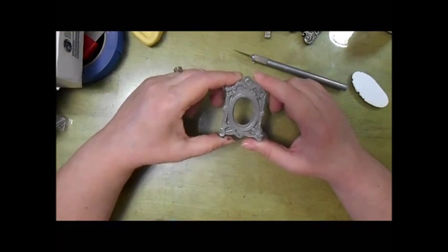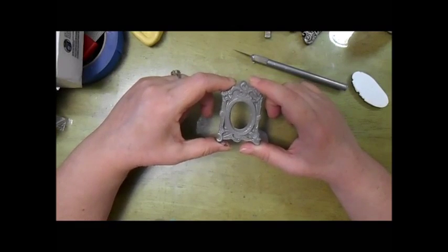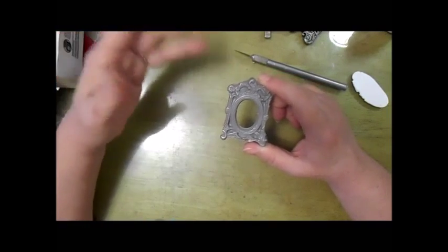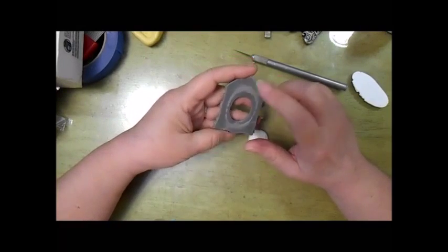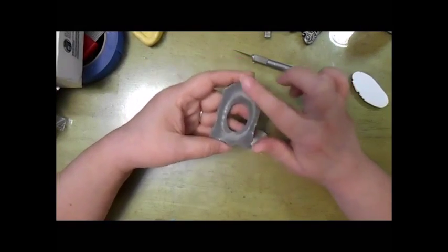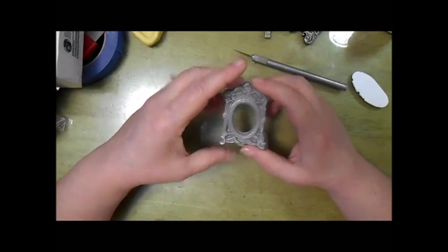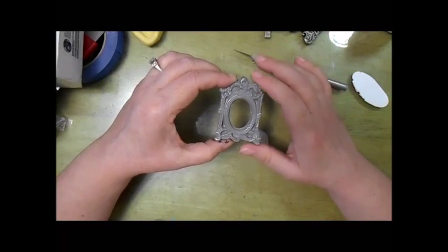This is a resin frame from a frame that I already had and I made a mold of it, poured it in resin. This resin is actually a cold cast piece, which is where you take resin and you mix a metal powder with the resin.